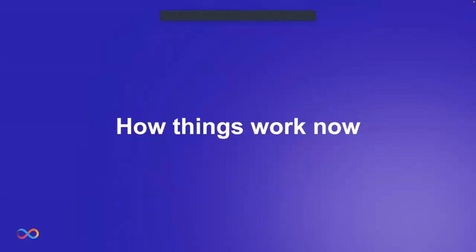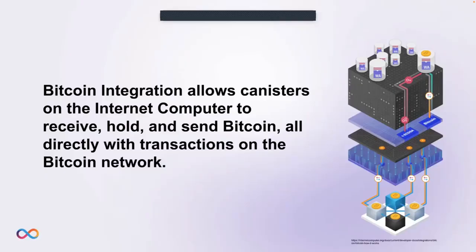Now that we know how things used to work, let's look at the Internet Computer's direct integration with the Bitcoin network. The BTC integration allows canisters on the Internet Computer to receive, hold, and send BTC directly with transactions on the BTC network. Direct in this context means no trust assumptions are required other than trust in the correct functioning of the Bitcoin network and the Internet Computer — no additional parties, bridges, or intermediaries required.